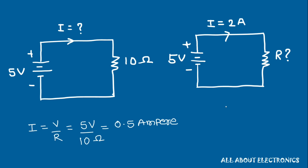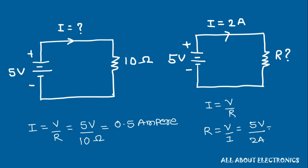In the second circuit, we have a 5V voltage source connected to an unknown resistor R, and the current flowing through the circuit is 2 Ampere. We need to find the value of this resistance. According to Ohm's law, R = V/I = 5/2 = 2.5 Ohm.